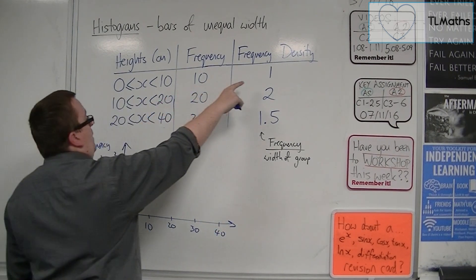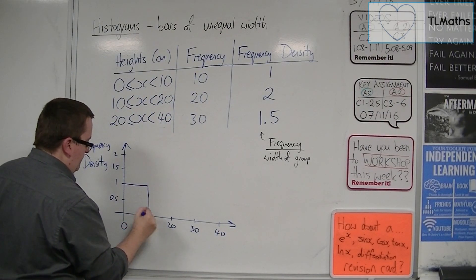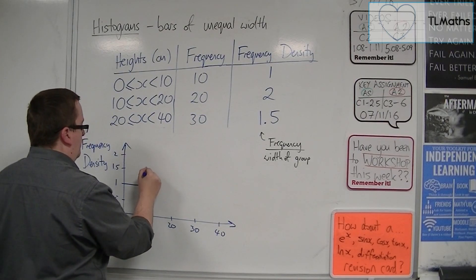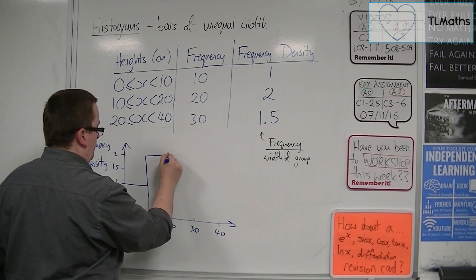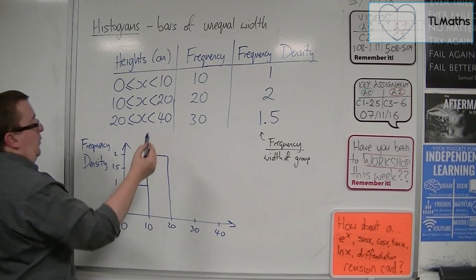So with my frequency density of 1 for 0 to 10. From 10 to 20, it's at 2. And from 20 to 40, it's at 1.5.